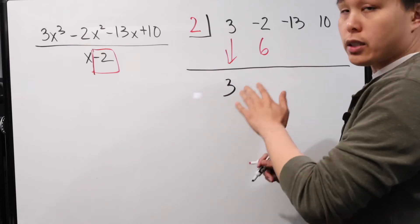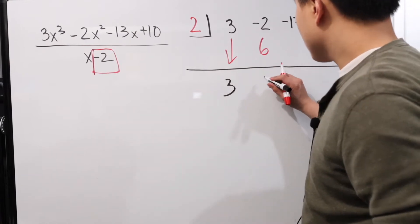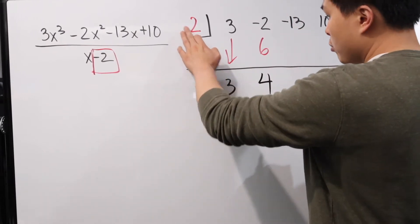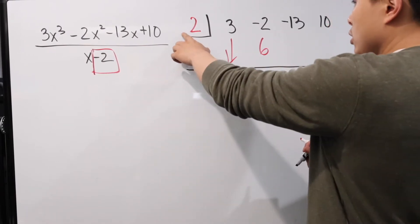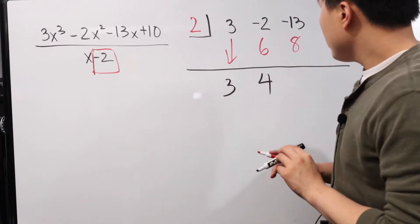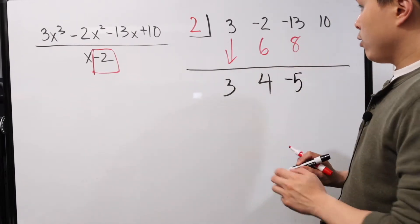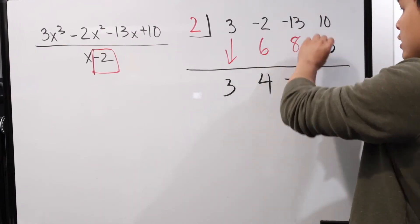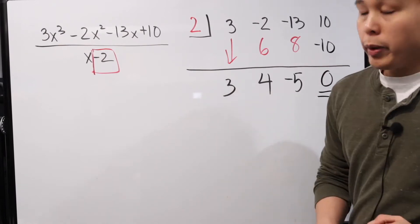Instead of subtracting like you normally would, you're adding it straight down. So it's going to be negative two plus six, which is going to be four. Then you multiply again: two times four is eight, so you put eight right here. Then negative thirteen plus eight is negative five. Now two times negative five is negative ten. Then you add these down and it gives you zero. That's what we want — if this is zero, it means there's no remainder.